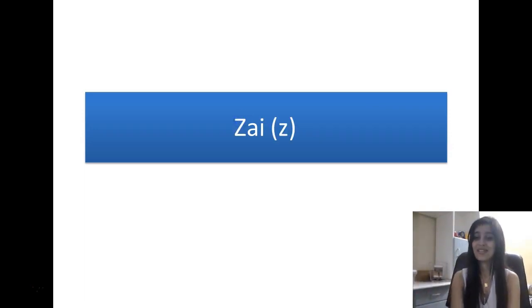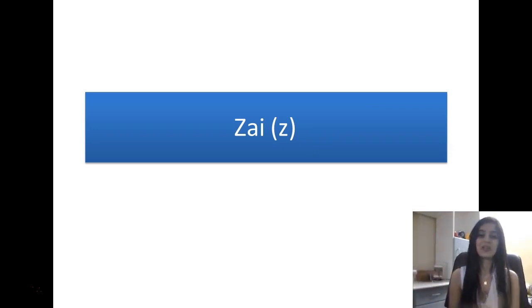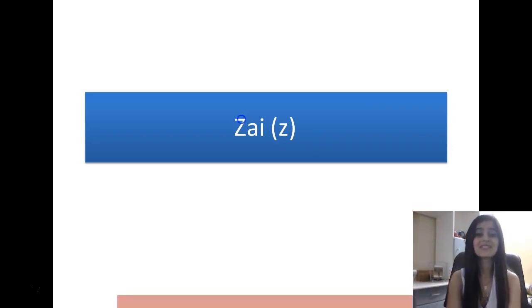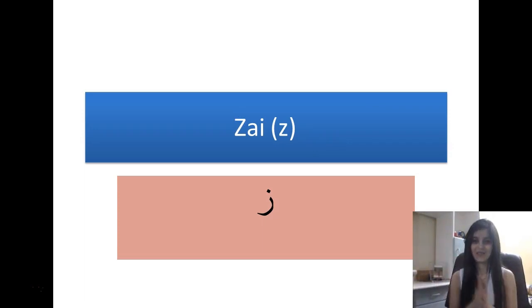Now the next is ZAY. ZAY is like a Z in English, the letter Z. And we pronounce it Z. And the shape of ZAY is like this.